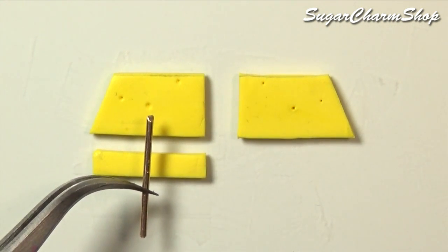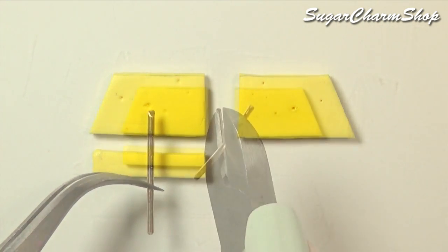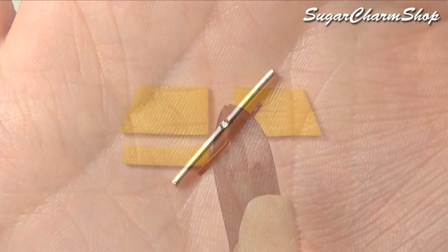Next you want to make the handle. I took a piece of brass wire, but you can also use a toothpick. I used pliers to make a mark in the center, just so that the clay I'm going to wrap around it is not going to slide around.